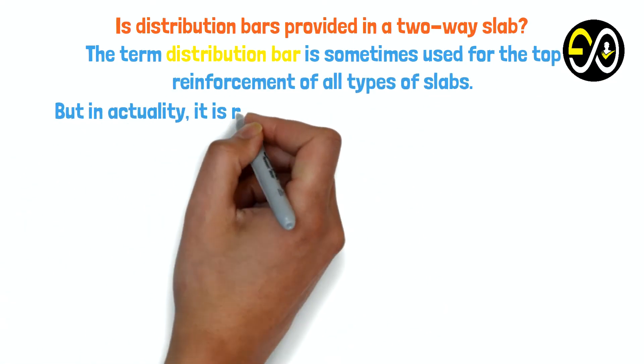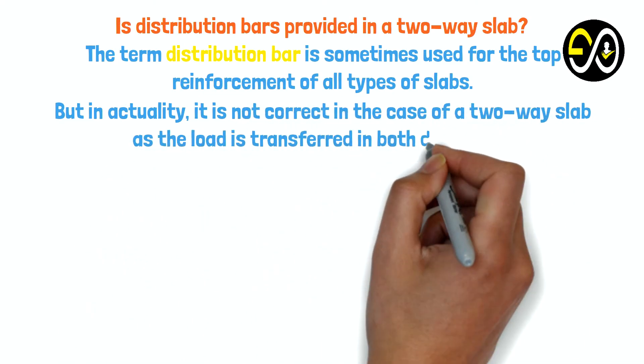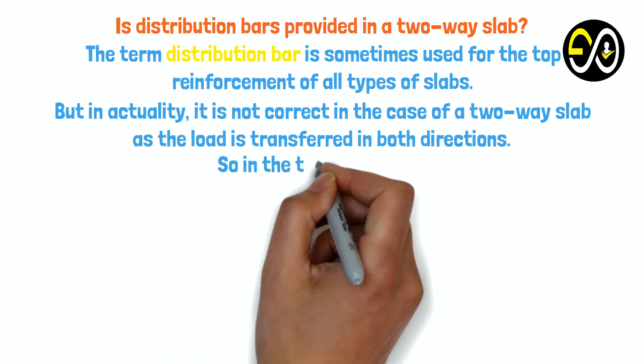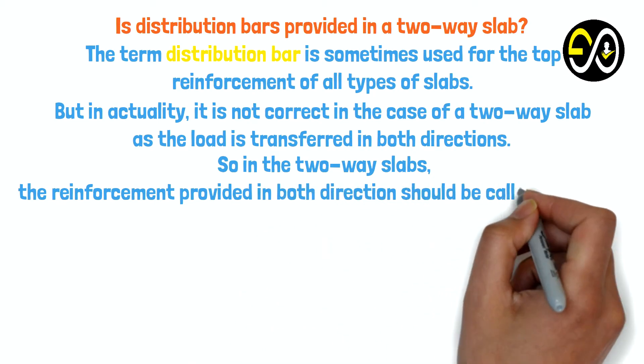But in actuality, it is not correct in the case of a two-way slab as the load is transferred in both directions. So in the two-way slabs, the reinforcement provided in both directions should be called main bars.